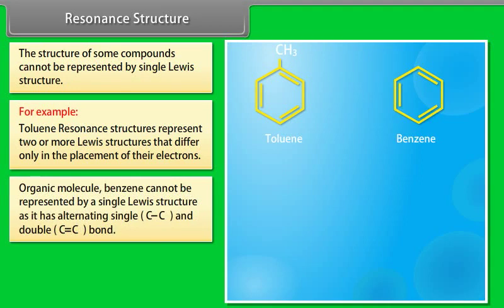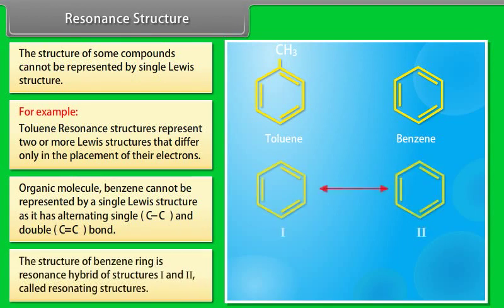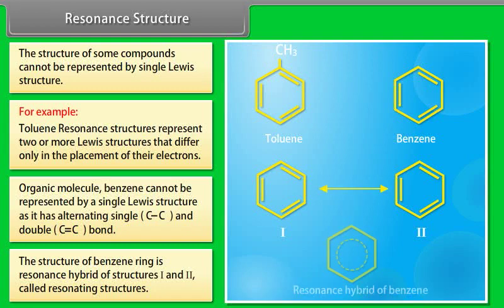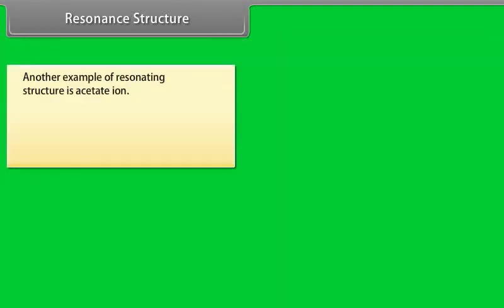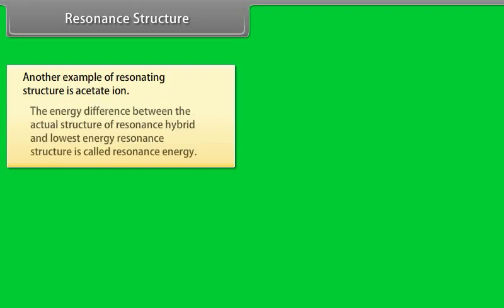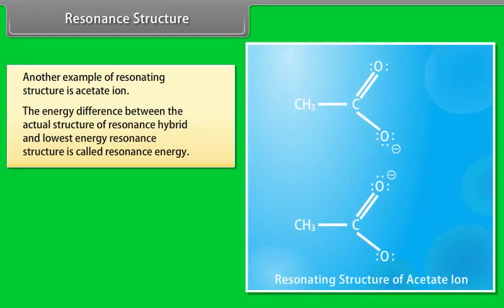Benzene cannot be represented by a single Lewis structure as it has alternating single and double bonds. The structure of the benzene ring is a resonance hybrid of two resonating structures. Another example of resonating structures is the acetate ion.